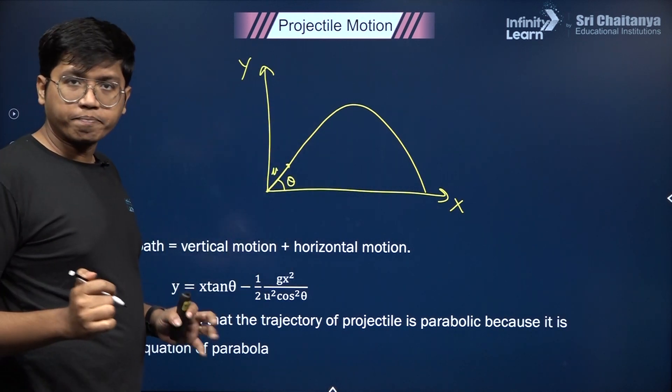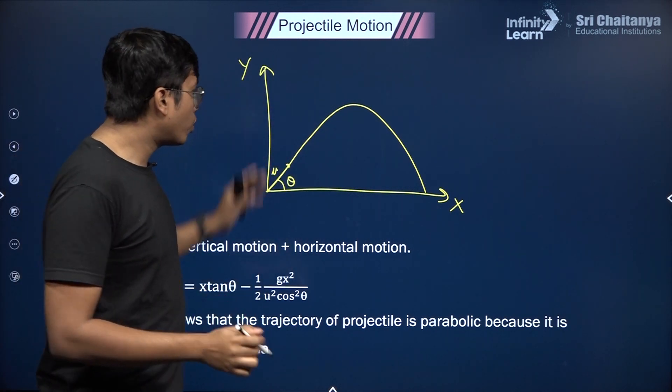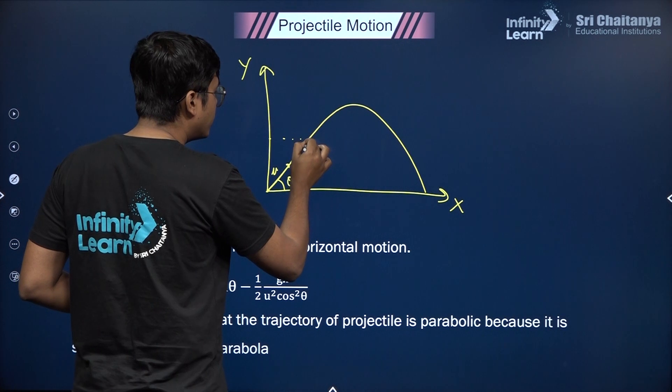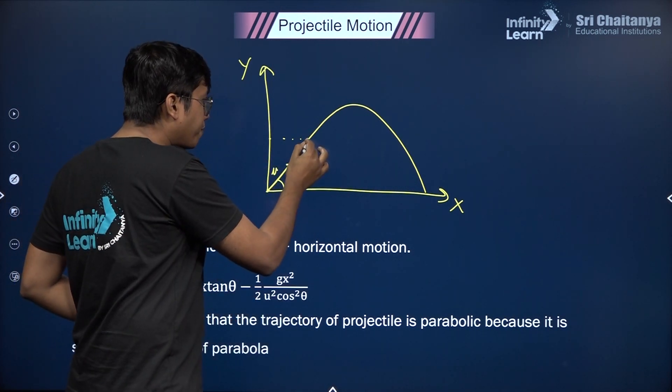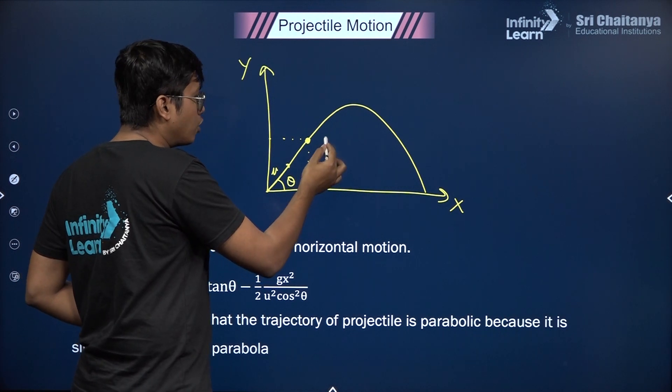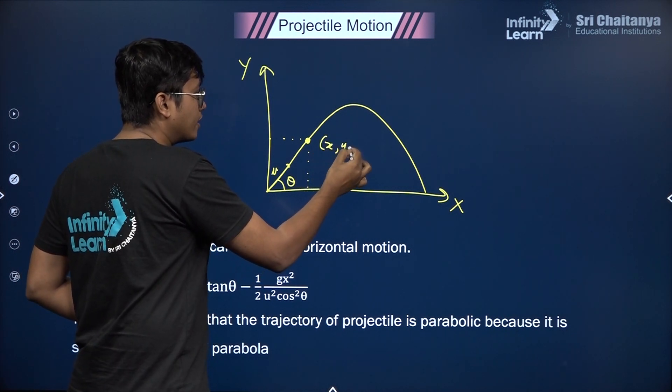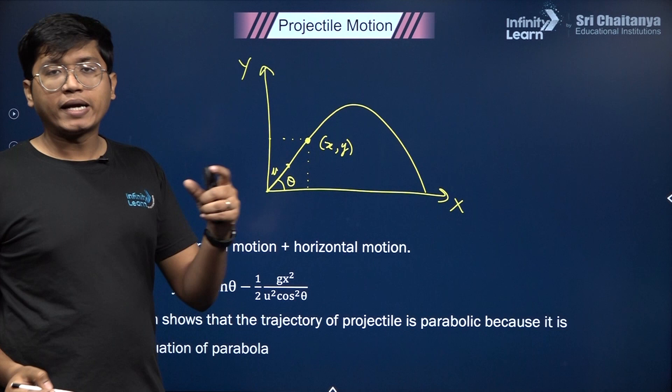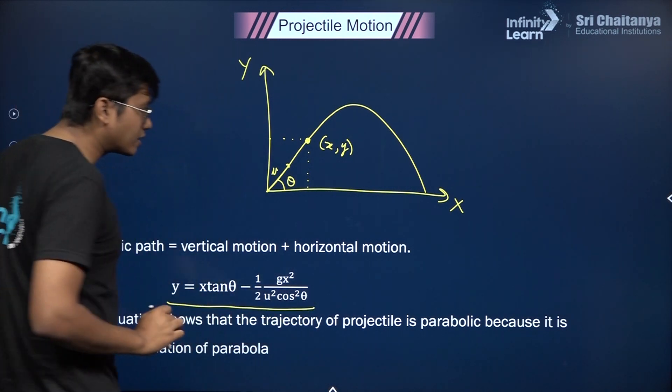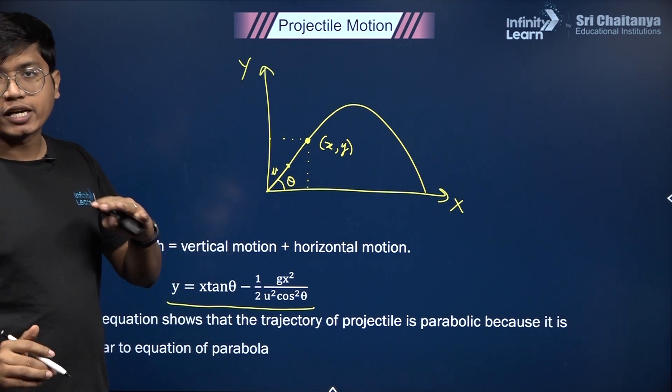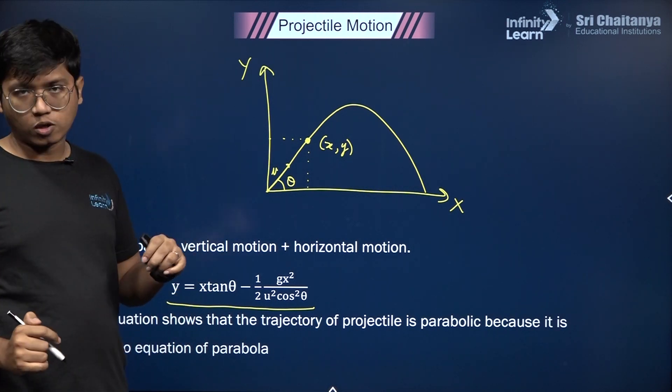Its y coordinate varies with regards to its x coordinate. If you take any point which has a certain value of x and y, then those would be satisfied by its equation of trajectory, which is given by y = x tan θ - (gx²)/(2u²cos²θ).